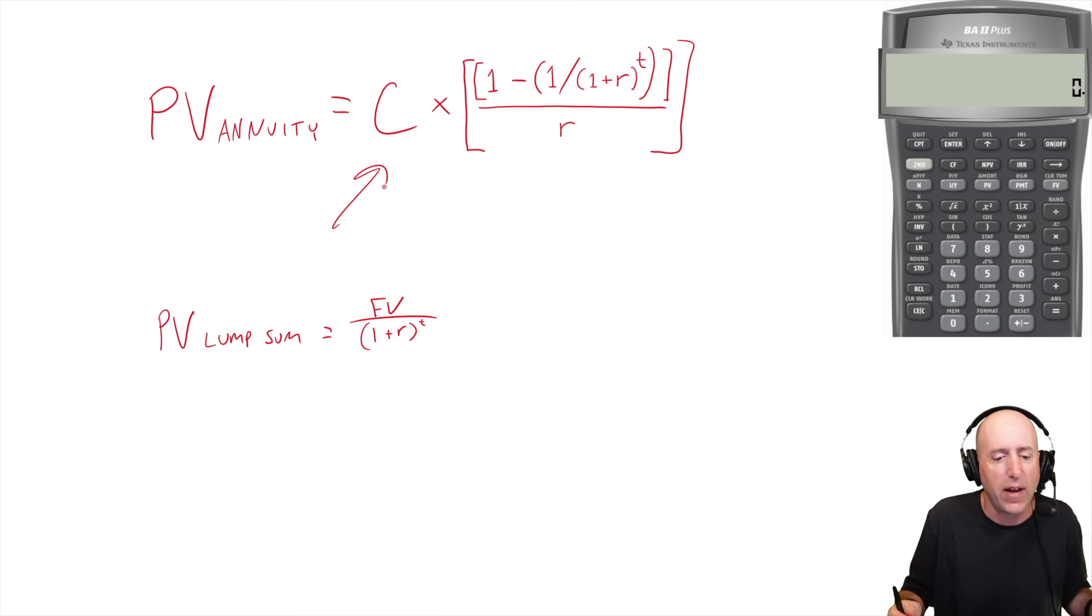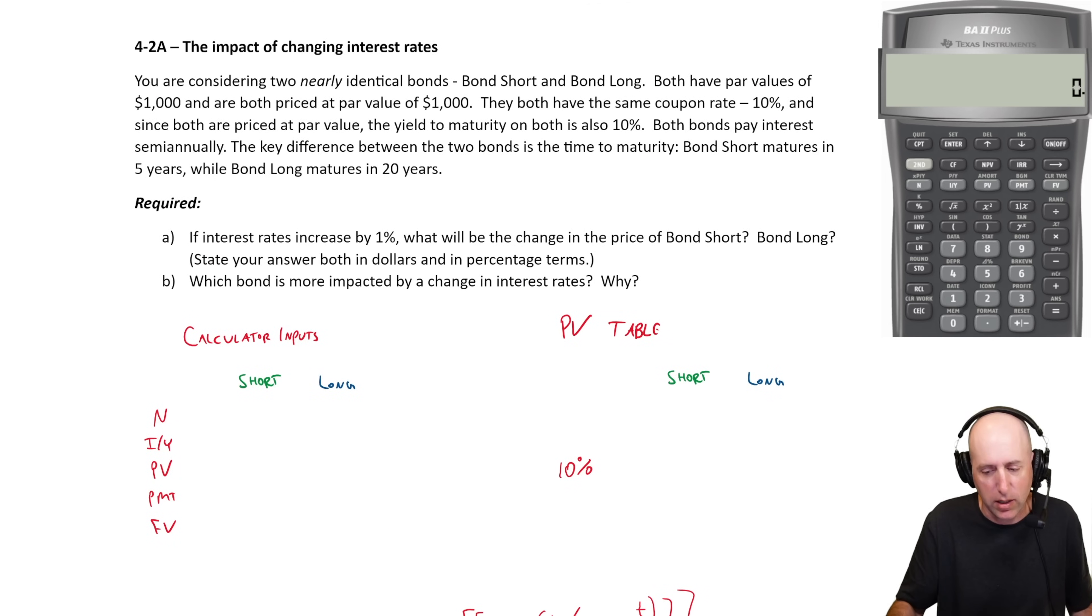There's a present value of a lump sum coming back to you at the end of the period of the bond. What we're going to do is look at a very short-term bond, a five-year bond, and compare it to a 20-year bond.